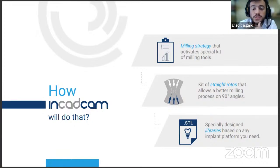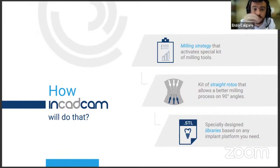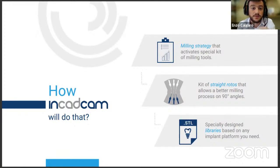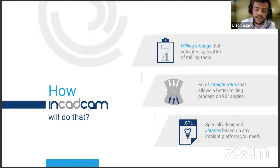Think about every 90-degree angle, every flat corner, sharp edge — think of the difference you'll have on those connections and fittings if you try to do it with a round top burr versus a flat one. We also offer specially designed libraries that have the STL of a scan body so you can mill the scan body in-house. Now that you're able to mill direct-to-fixture constructions, you can mill the scan body, scan the case, and design using the same library.